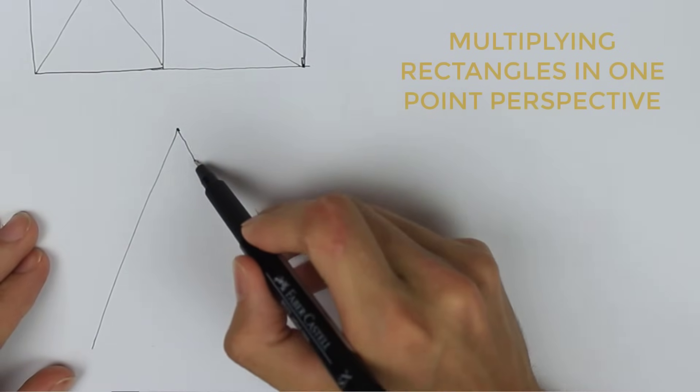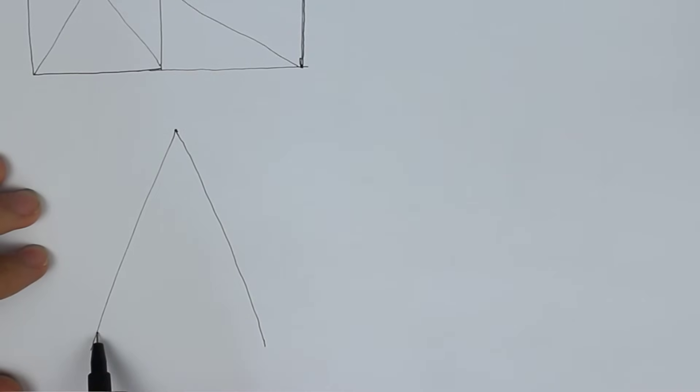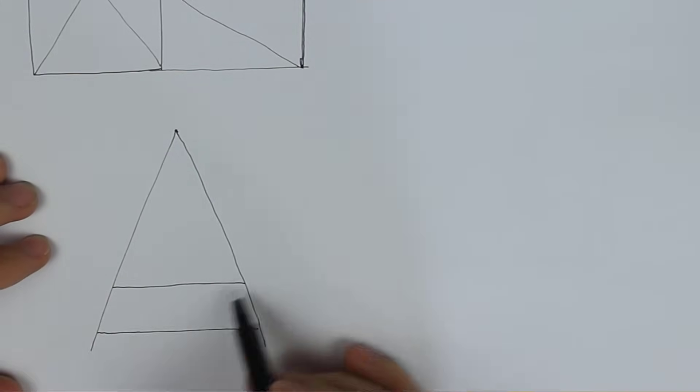We can do the same thing in one point perspective. I'm going to start by creating a plane below the horizon line. Now that we have this plane, we can duplicate it back in perspective by doing the same thing.